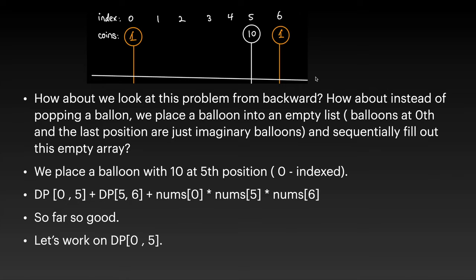How about we look at the problem from backward? Instead of popping a balloon, we place the balloon into an empty list and sequentially fill the entire empty array. So initially you have nothing from position 1 to 5. Then you place the balloon with value 10 at position 5, and the maximum coin you get is 1 * 10 * 1. So dp[0][5] plus dp[5][6] plus this product gives nums[0] * nums[5] * nums[6].